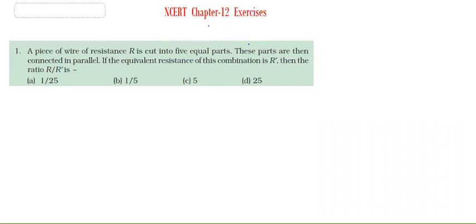Chapter 12 Electricity, first exercise. First question: A piece of wire of resistance R is cut into 5 equal parts and these parts are then connected in parallel. If the equivalent resistance of the combination is R', then you have to find the ratio of R to R'.